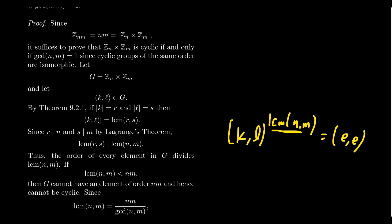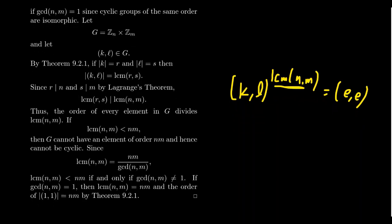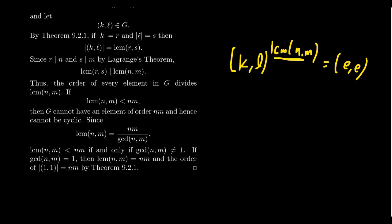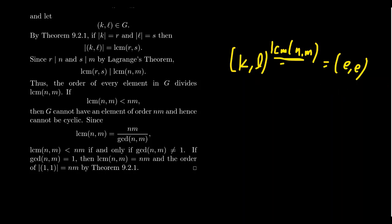This observation tells us that the maximal order of any element in G is going to be the least common multiple of N and M. In group theory this is referred to as the exponent of the group — the smallest number for which every element raised to that power gives the identity.